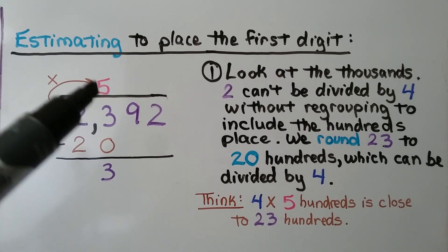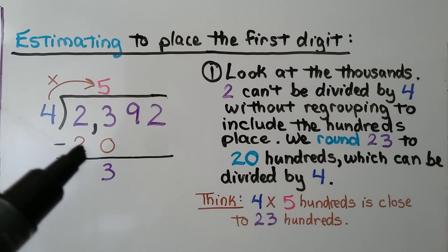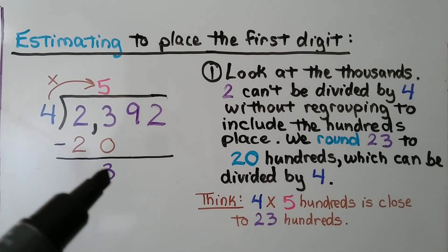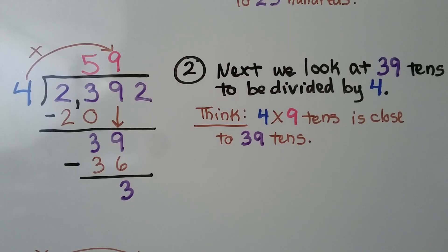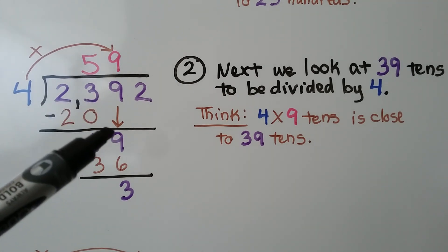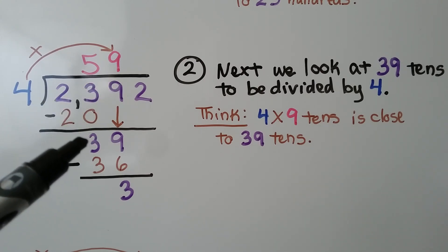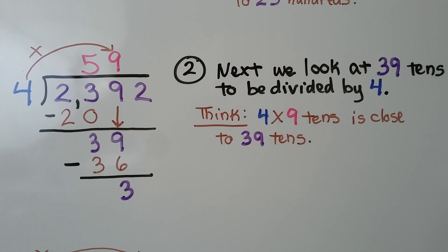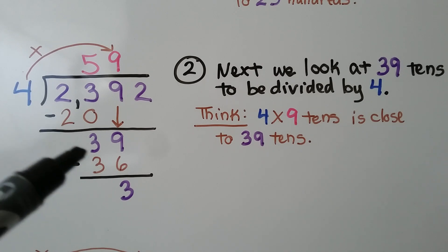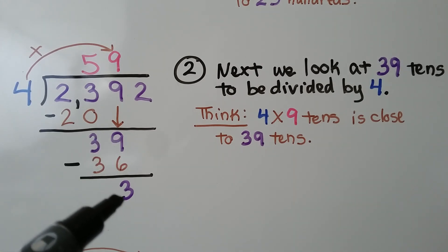We put a 5 above the hundreds place. 4 times 5 is 20. We do our subtraction and there's a 3. Next, we look at 39 tens — because we got a 3 when we subtracted, it was the 9's turn to come down, and this is 39 tens. We think 4 times 9 tens is close to 39 tens. 4 times 9 is 36. We do our subtraction and we put a 3 here.